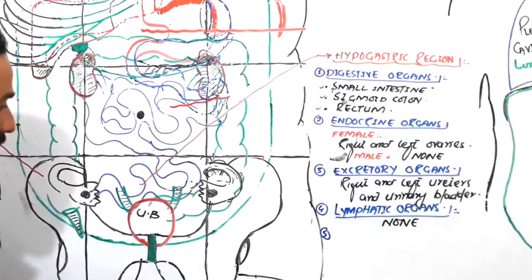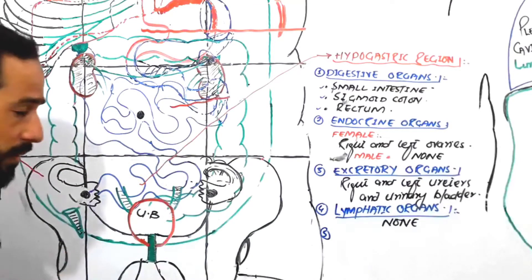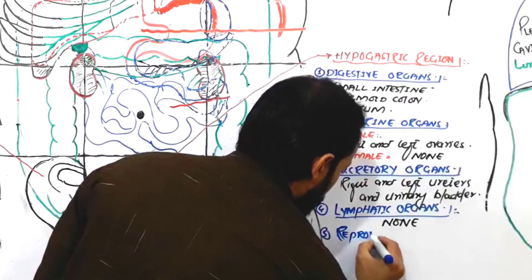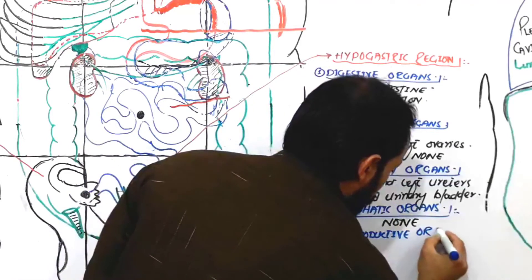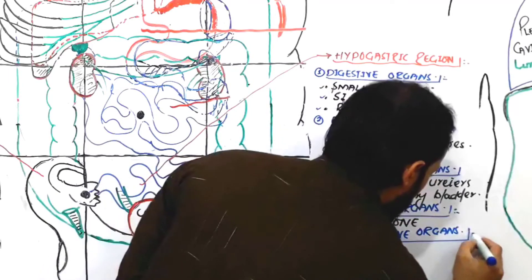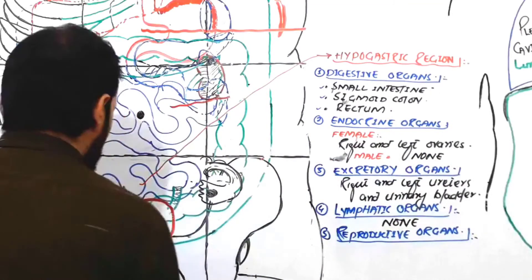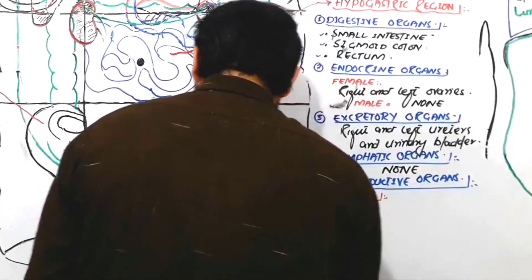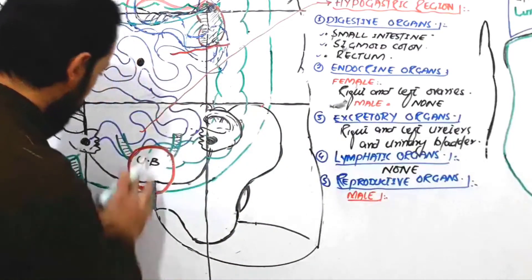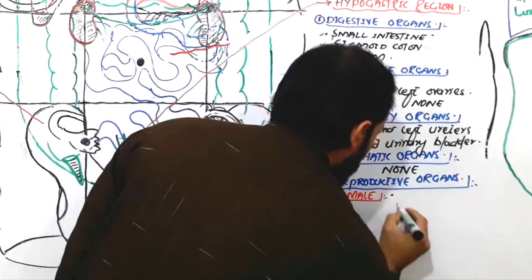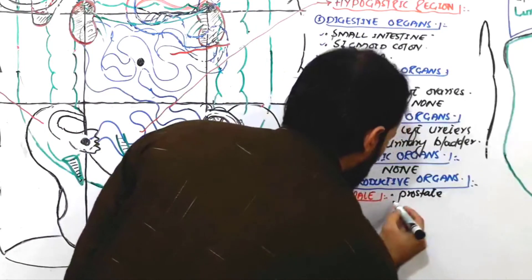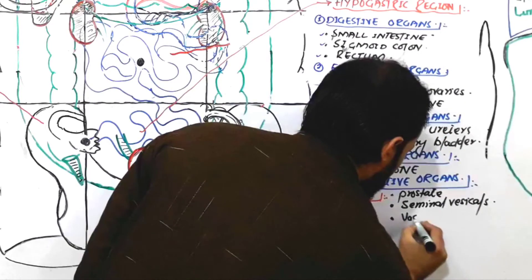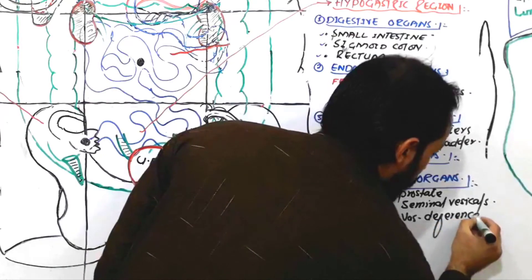The fifth group is the reproductive organs, and there are many reproductive organs found in the hypogastric region. In case of a male, there will be the vas deferens, the prostate, and the seminal vesicles present in the hypogastric region.